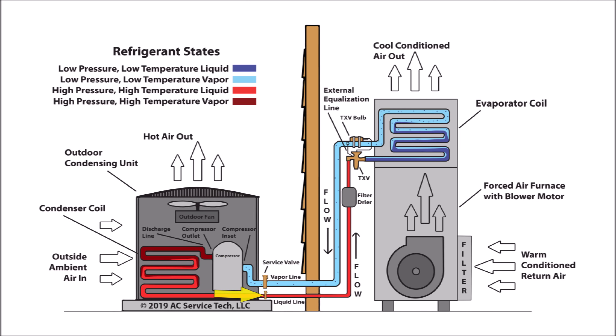The refrigerant exits the outdoor unit as a high pressure, high temperature, sub-cooled liquid, continues through the liquid line service valve, and goes over to the filter dryer. The filter dryer's job is to store any water molecules in the system, but it's limited due to its size. This prevents the water from mixing with the refrigerant, which would create alcohol and acids. It then exits the filter dryer as a high pressure, high temperature liquid refrigerant.